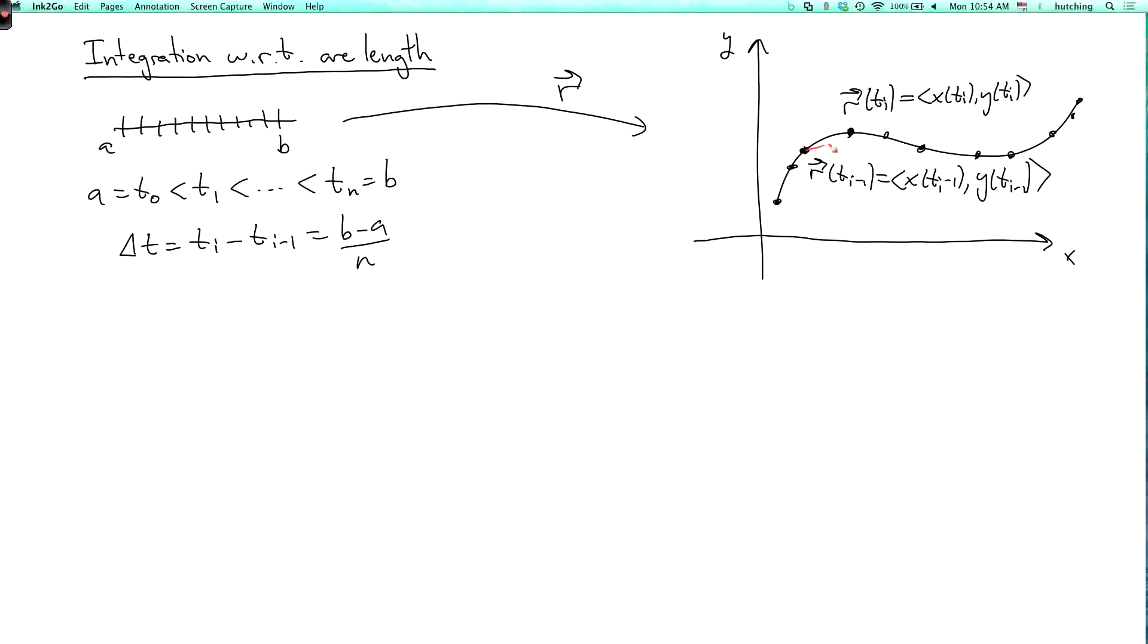So let's look at that under magnifying glass. So here's our piece of curve. So here's r of ti minus 1, which is x of ti minus 1 comma y of ti minus 1.